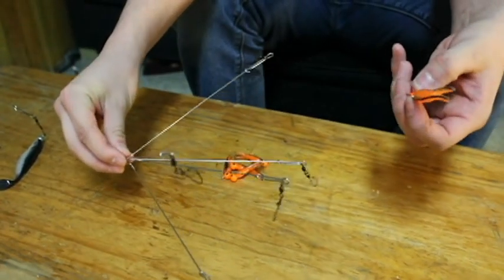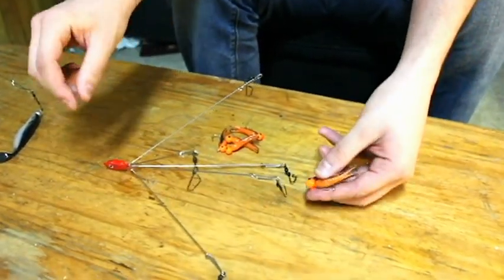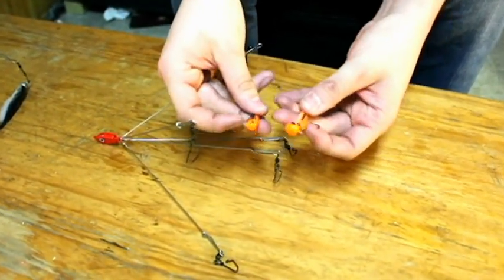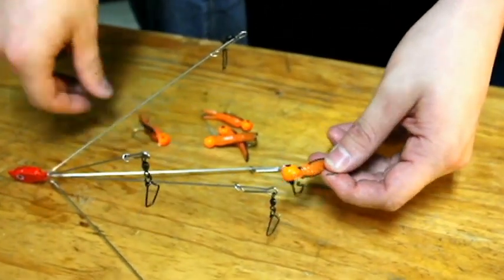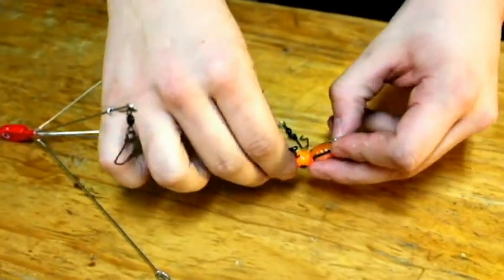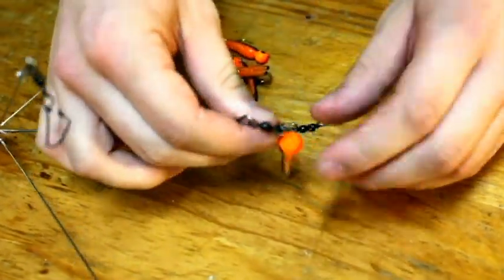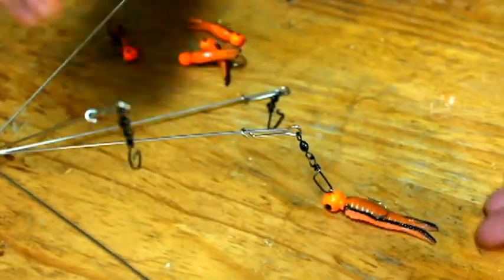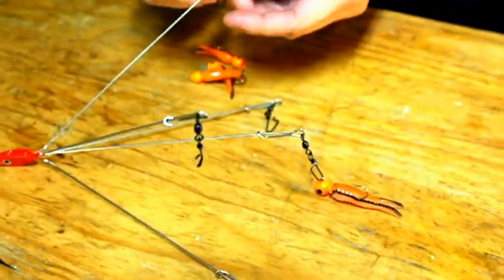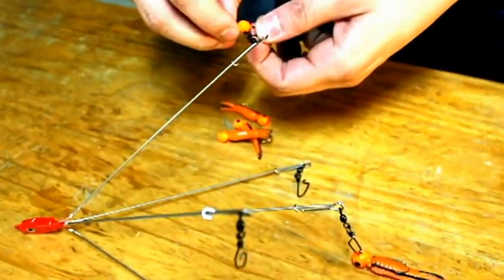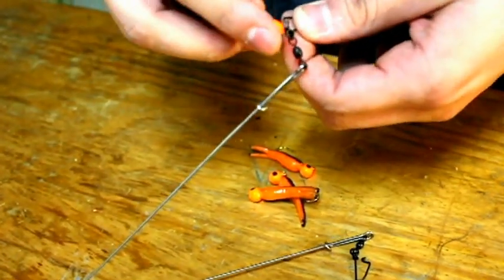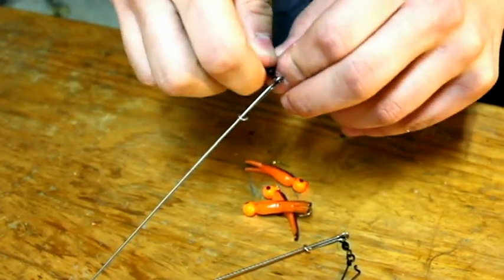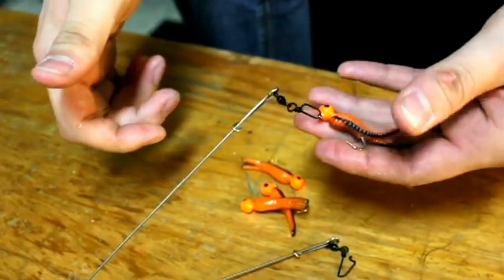Okay, here we have our Alabama rig that we just unfolded and our jigs. I have two different sized jigs, one's a little bigger and one's a little smaller. I'm putting the bigger one on the middle, just like so, the other ones on the outside like this.